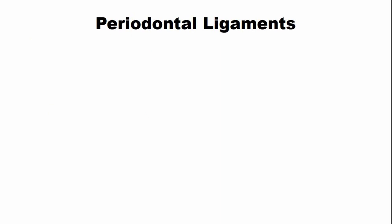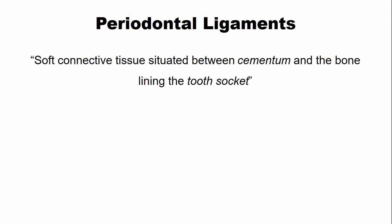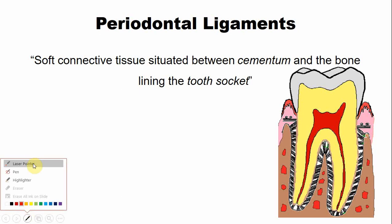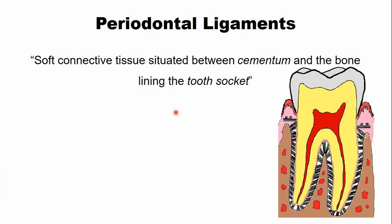Periodontal ligaments are the soft connective tissue that are present between the cementum and the bone lining the tooth socket. This is a diagram of the longitudinal section of the tooth. In this picture, you can see these are the periodontal ligaments.